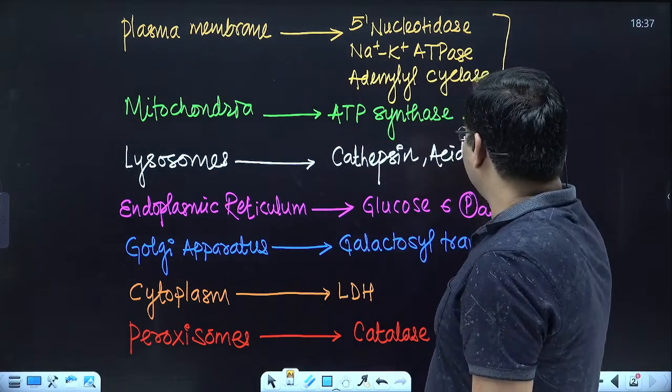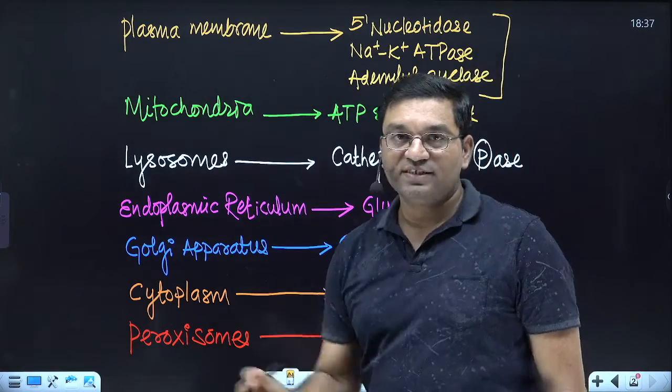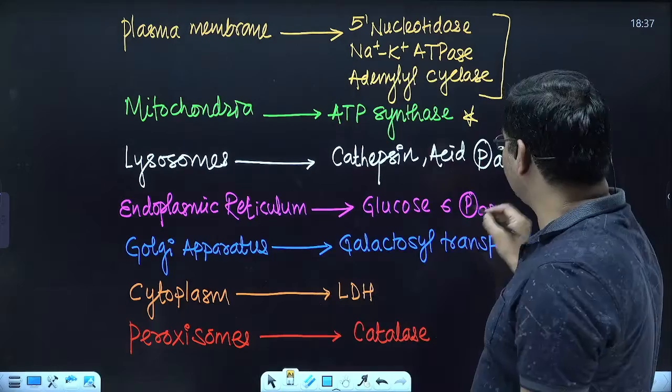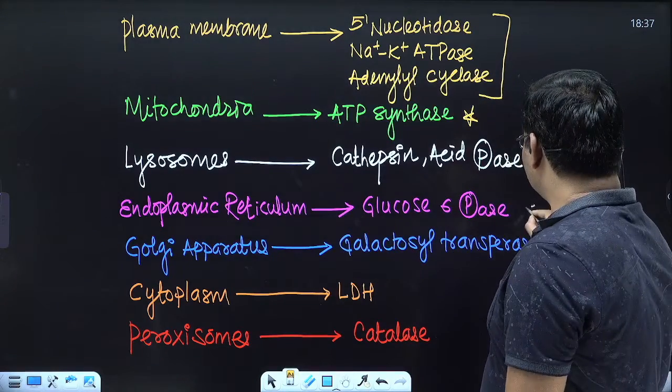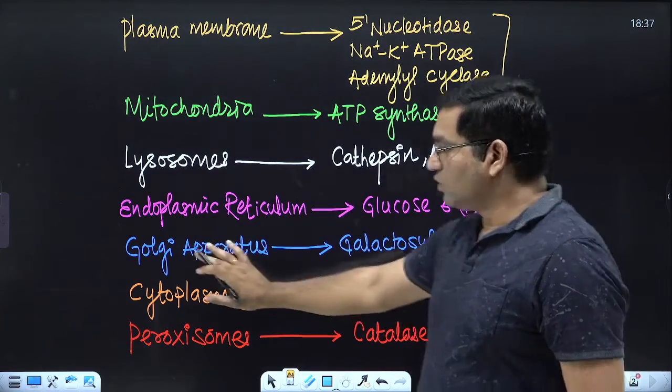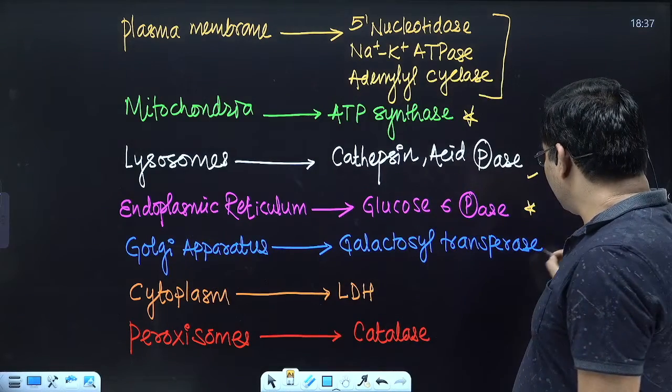Mitochondria ATP synthase. Lysosome, it is cathepsin or acid phosphatase. Then for endoplasmic reticulum, glucose 6-phosphatase. Golgi apparatus, it is galactosyl transferase.